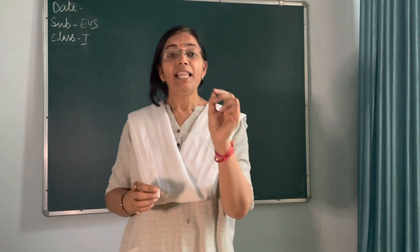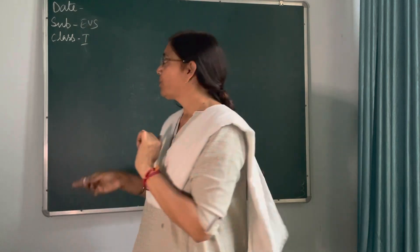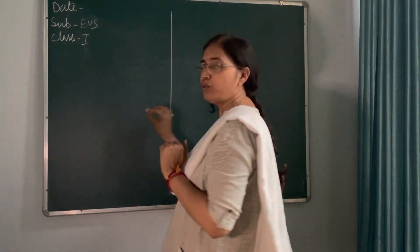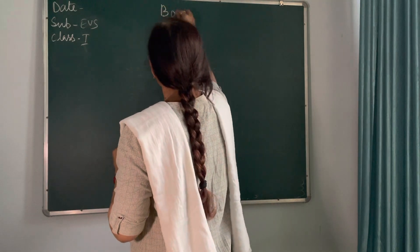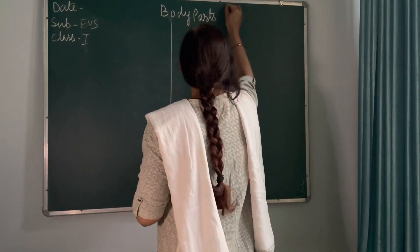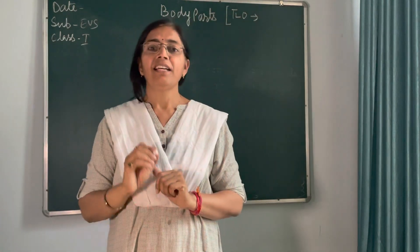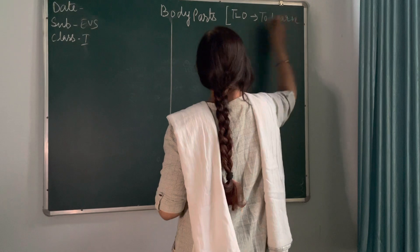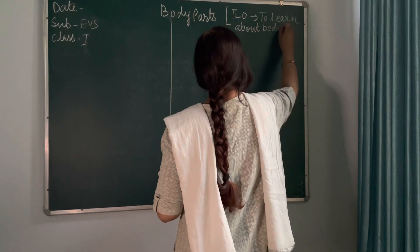Like the ten little fingers in this line, we are going to learn about ten fingers. So teachers, what you have to do is first make your board divided into two parts, and write here the name of the lesson: Body Parts. And here write down the TLO — that is the Target Learning Outcome — to learn about body parts.